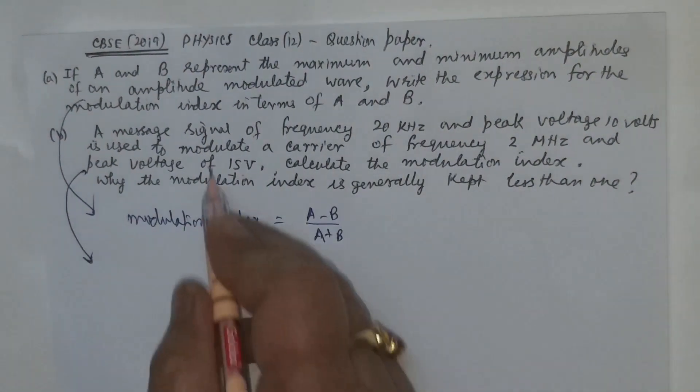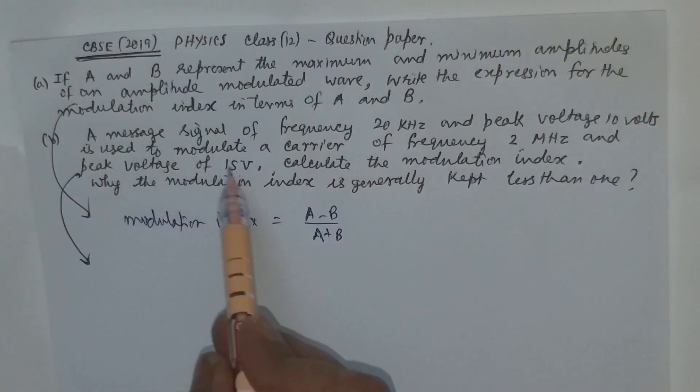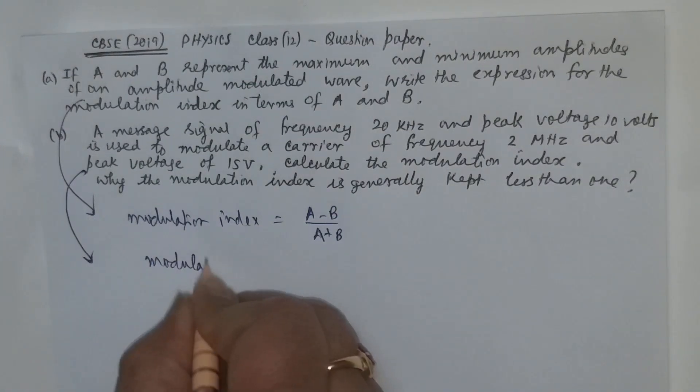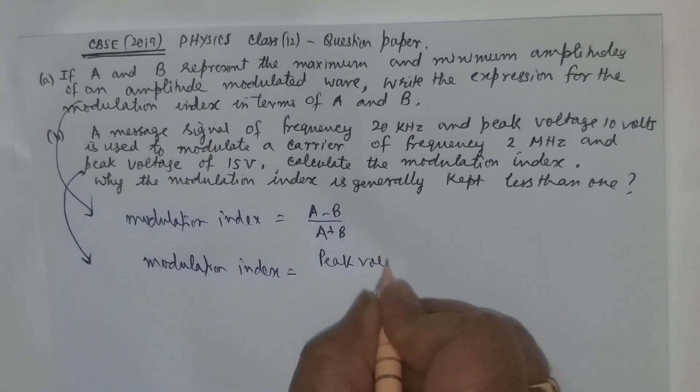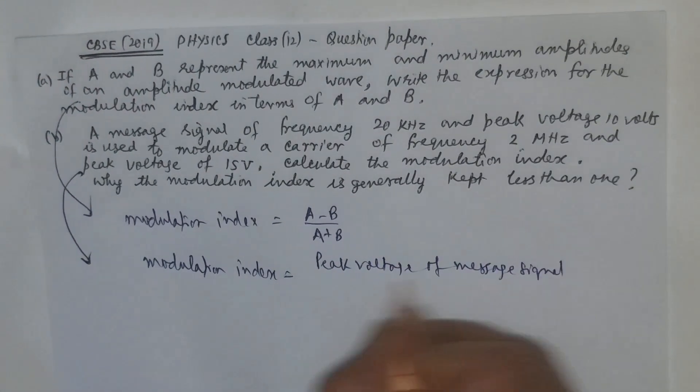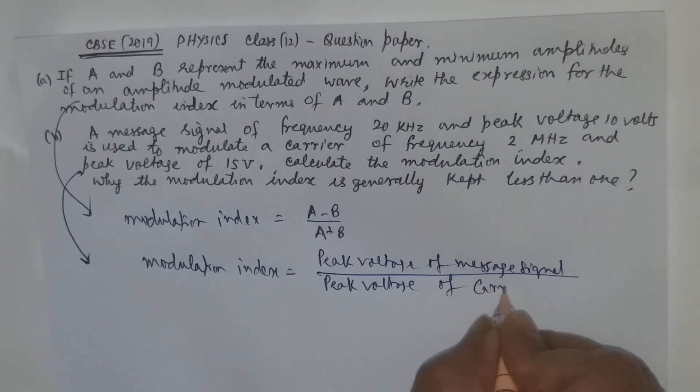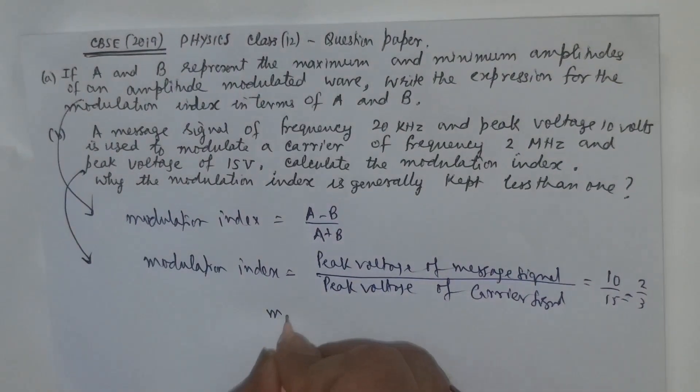In the second case, a message signal of frequency 20 kilohertz and peak voltage 10 volts is used to modulate a carrier of frequency 2 megahertz and peak voltage of 15 volts. Let's calculate the modulation index. In this case the modulation index will be equal to peak voltage of the message signal divided by peak voltage of the carrier signal.